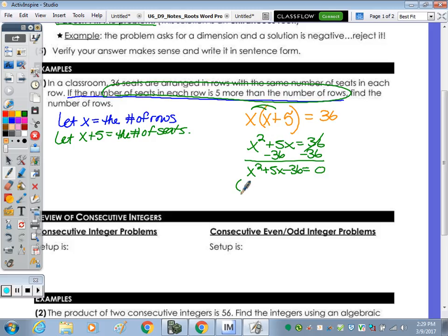Now we're looking for the factors of negative thirty-six that combine to a positive five. Four and nine. Positive nine, negative four. Because positive nine times negative four is negative thirty-six, and positive nine plus negative four is positive five. We have one root of four and the other root of negative nine. Since X is the number of rows, can you have a negative number of rows? No. So this is an extraneous solution. We reject it. So X is four.